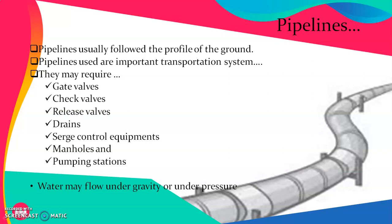Water may flow under gravity or under pressure. In case of pipelines where water is lifted from the source to the water treatment plant and from the water treatment plant to different consumers, it runs under pressure. Pressure can be generated in a rising main with the help of a pump, while the same effect can be achieved with a falling gradient where water runs under gravity in the case of a distribution system.